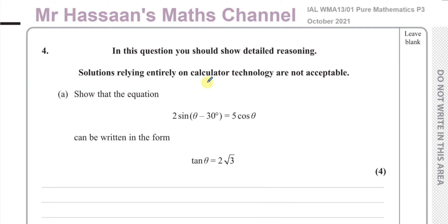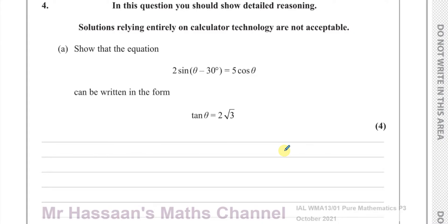Okay, welcome back to Mr. Hassaan's Maths Channel. In this question here, question number four, this is from the October 2021 Pure Mathematics P3 International A Level Edexcel exam. This is question four that I'm answering right now on trigonometry identities and equations. It says show that the equation 2sin(θ - 30°) = 5cosθ can be written in the form tanθ = 2√3.